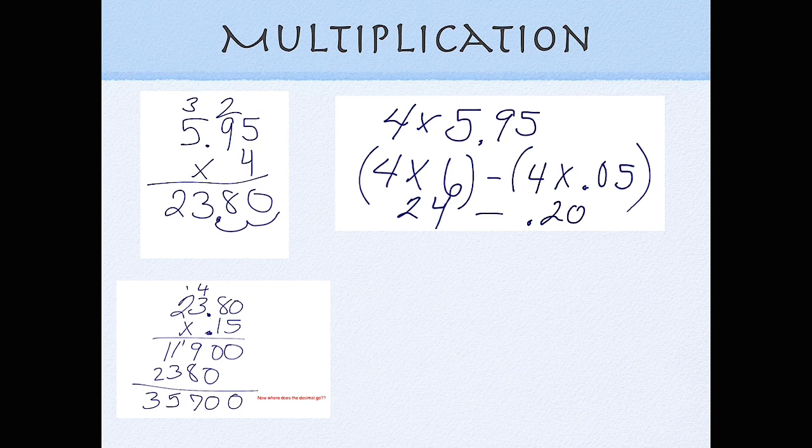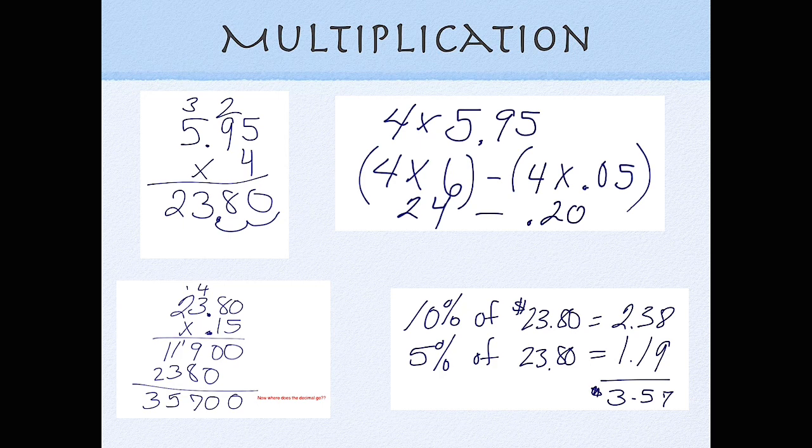Or do you instead break it up and find 10% of that amount that you need to leave a tip for, and then figure out 5%, because you know 5% is just going to be half of what the 10% was, and then you put those together.